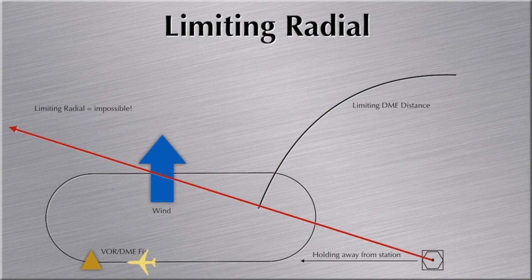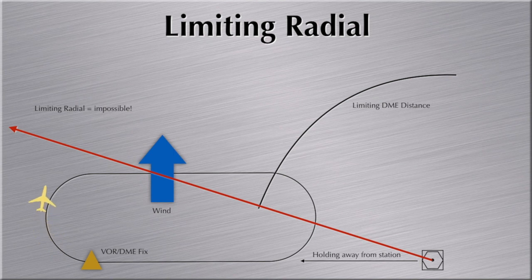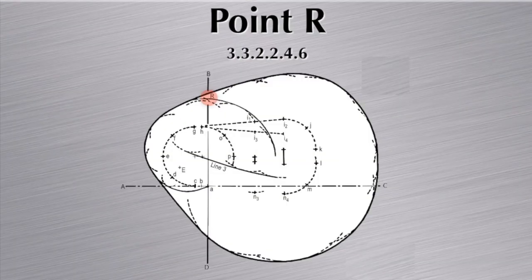When I specify the limiting radial, it must be specified such that the aircraft is allowed to finish the outbound turn before being forced to start the inbound turn. In PANS OPS paragraph 3.3.2.2.4.6, it states that Point R is used to determine the lowest position of the limiting radial, so that this radial does not cross the area containing the end of the outbound turn.